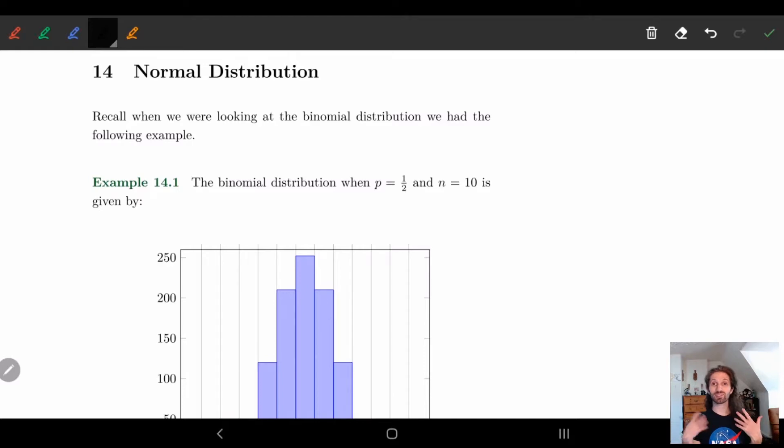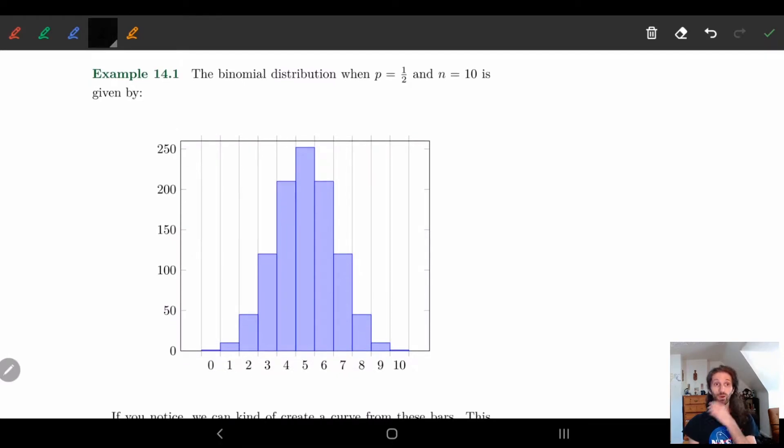So the best way to kind of do this is look at an example and kind of go from there. The example that we're going to work with is an example we actually had seen before with a binomial distribution. In this case, we let the probability be 1 half, so we took a coin flip and we flipped it 10 times. And this was the kind of distribution that we got for the number of heads.